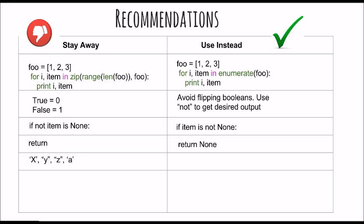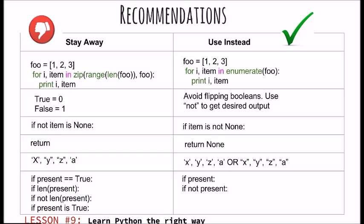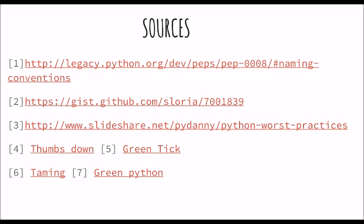Using similar quotes for strings — either single or double, not mixing them — helps keep consistency. If you have strings inside strings, use single quotes for the outer string and double quotes for the inner string, or vice versa. It's best not to compare boolean variables to True or False, or check if a variable has content by checking its length. Instead of 'if len(present)' or 'if not len(present)', just use 'if present' or 'if not present' to check the presence and content of the variable. Lesson number nine: learn Python the right way. And lesson number ten: have fun coding in Python — see you soon!